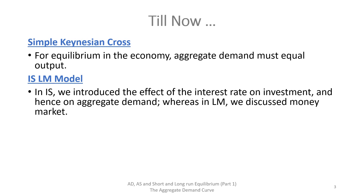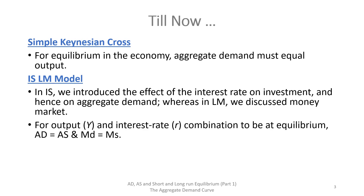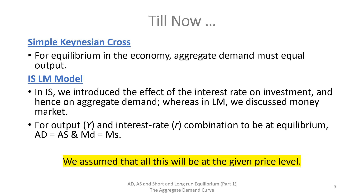From the IS-LM model, we learnt that for output and interest rate combination to be at equilibrium, aggregate demand should be equal to aggregate supply and money demand must be equal to money supply. It is important to note that during all these models, we assumed the price level to be given — that is, we assumed that price level is exogenously fixed.